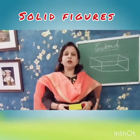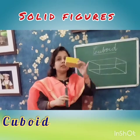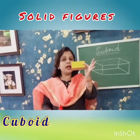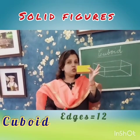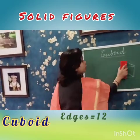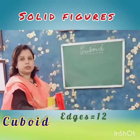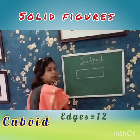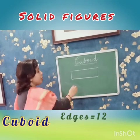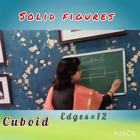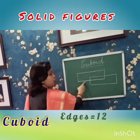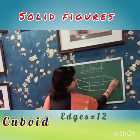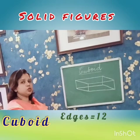Now children, we are going to learn about a cuboid. This is the shape of a cuboid. A cuboid has 12 edges. Now, how do you say that a cuboid has 12 edges? We draw a rectangle — this one rectangle has 4 edges. We draw another rectangle of the same size, so 4 and 4 edges, that is 8 edges. We join the corners: 9, 10, 11, 12. It has 12 edges.